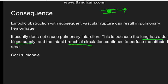However, due to occlusion, the vessel gets ruptured and a pulmonary hemorrhage takes place. Also, in some cases where the emboli is large enough, it can lead to cor pulmonale, which is right-sided heart failure. It can be acute in nature if the embolus is large enough, or it can also be chronic in nature.